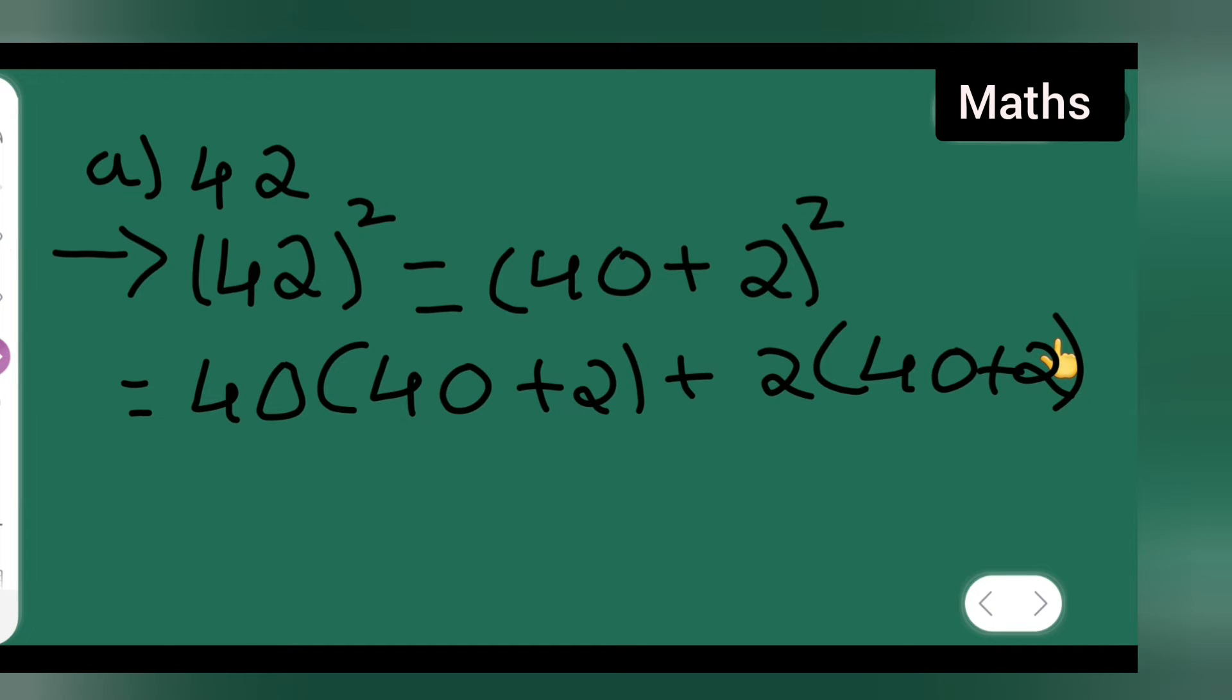What I have done is first thing I have taken this 40 outside. I have to multiply 40 plus 2 here, plus I have to do 2 into 40 plus 2. Now let us see what to do. 40 into 40 will be, you are going to get 40 square.